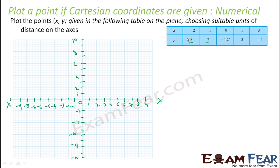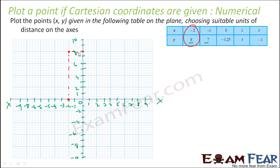Let's plot the first point: minus 2 comma 8. x is minus 2 — this point; y is 8 — this point. We draw lines here and here and they will meet somewhere. Drawing the perpendicular lines, they meet here. So this is the first point: minus 2 comma 8.